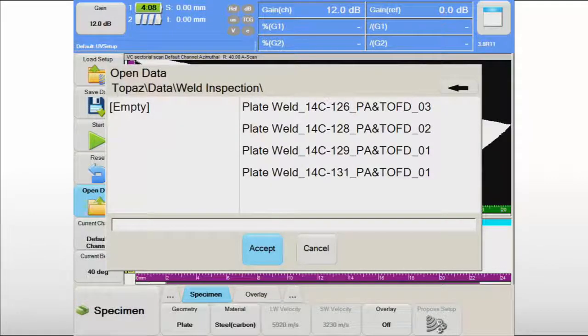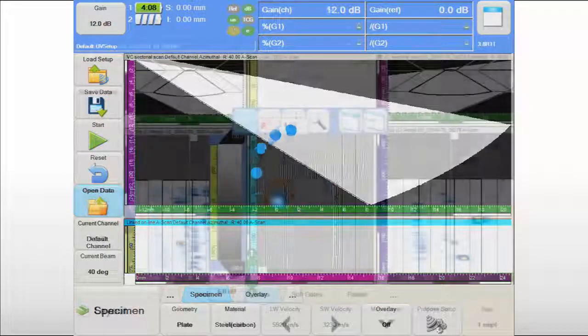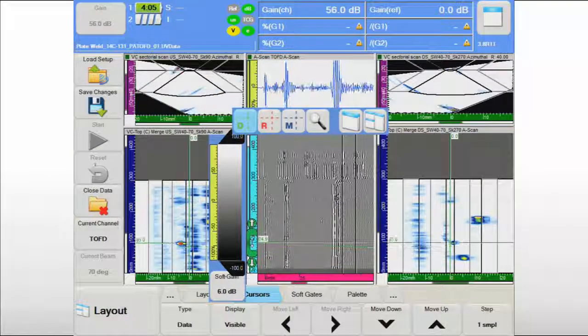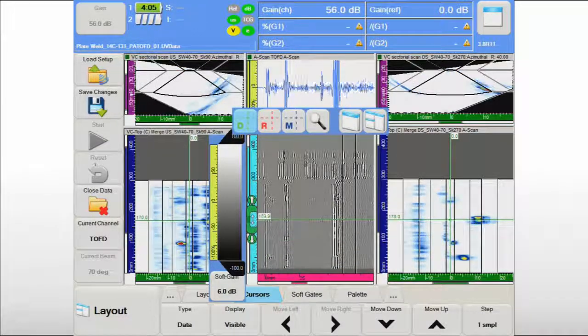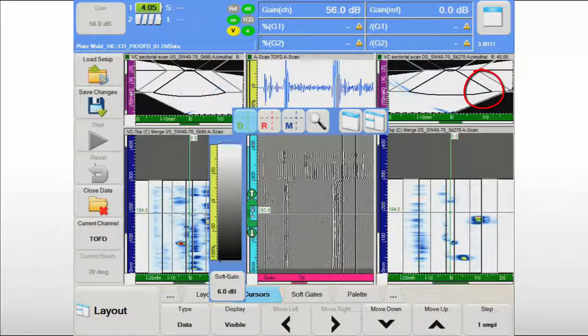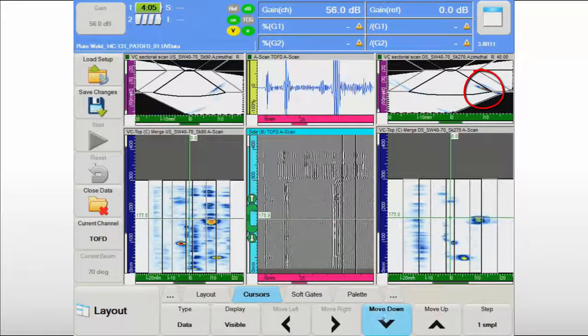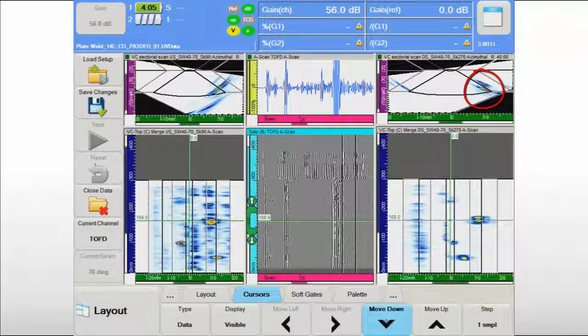Previously recorded data files can be easily retrieved using the intuitive UltraVision Touch interface. By moving the data cursor, the data analyst can scroll through the inspection data to validate the quality of the recording and to identify critical regions. To perform the detailed evaluation of the indications, the data analyst can load dedicated layouts optimized for each inspection technique.